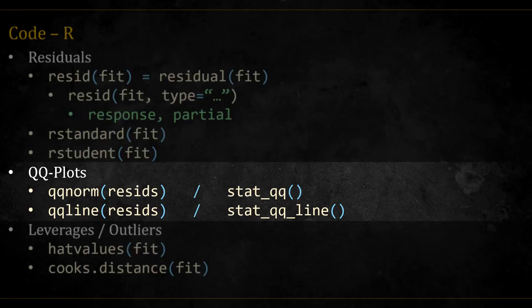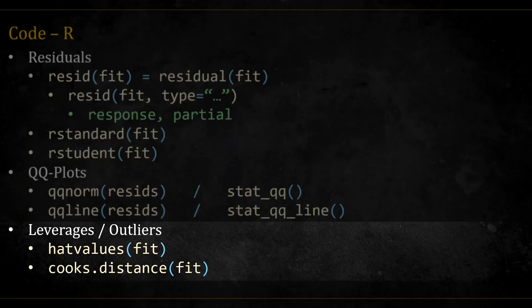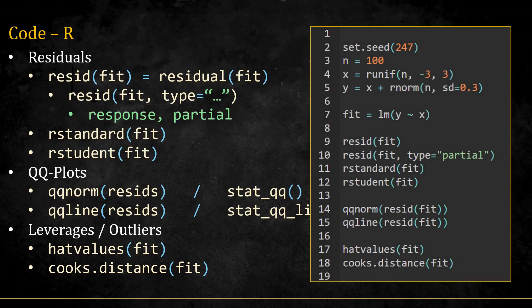For the QQ plots, we can use the qqnorm and qqline functions from base R or the stat_qq and stat_qq_line for a ggplot type of graph. For the leverages, we can use the hatvalues function. For the Cook's distance, we can use the cooks.distance function. Here is a simple script that summarizes all of these commands. You can pause the screen to have a better look.